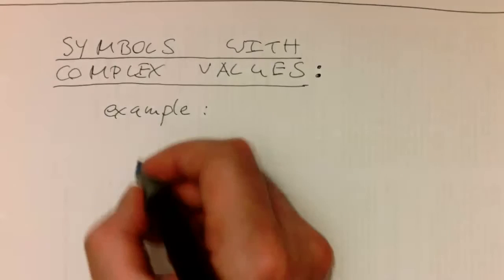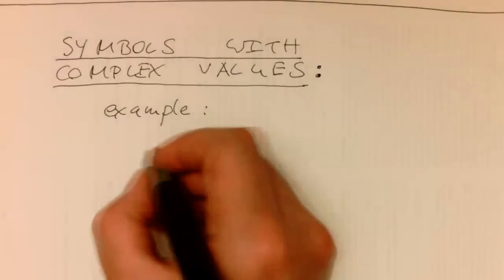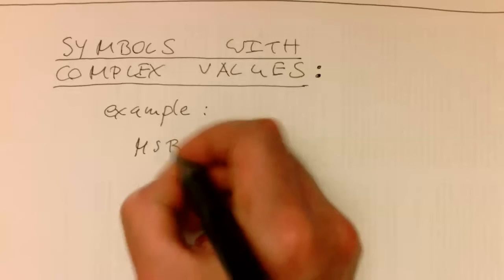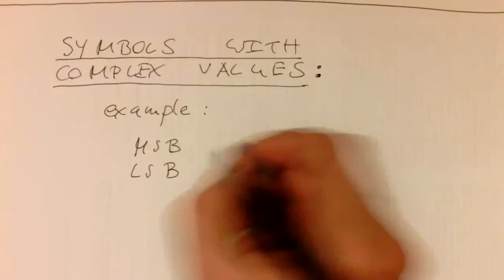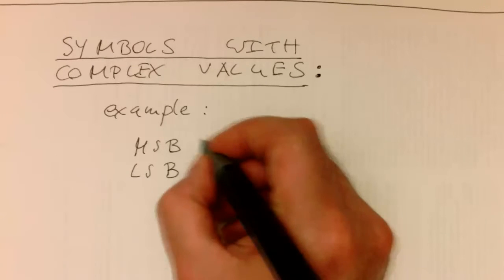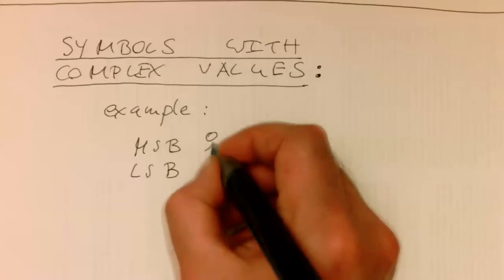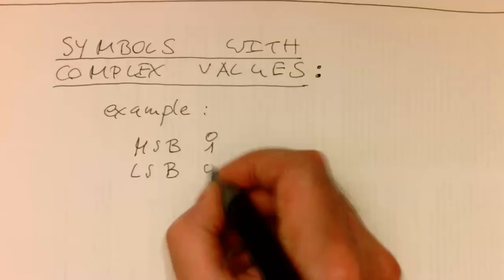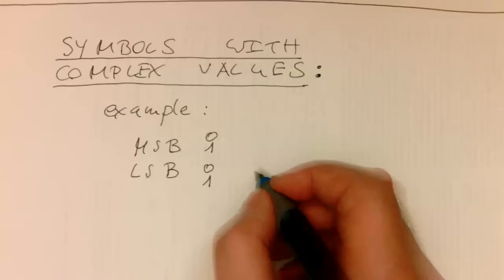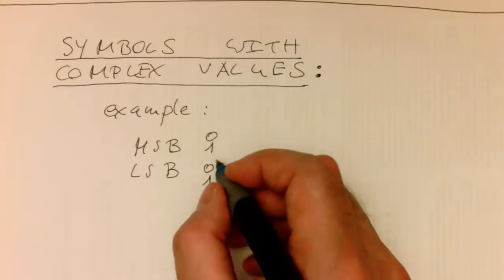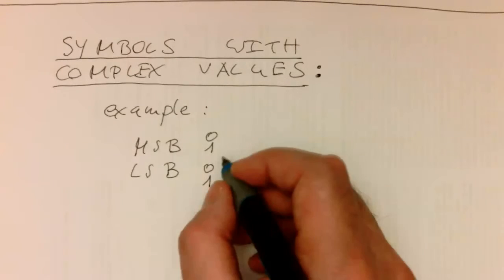Imagine we have two bits: the MSB, the most significant bit, and the least significant bit. Obviously MSB can be zero and one, and the LSB can be also zero and one, so we've got four combinations. In the past we could package them with two different voltages or two different levels.